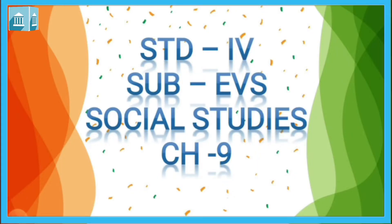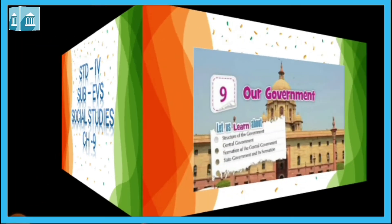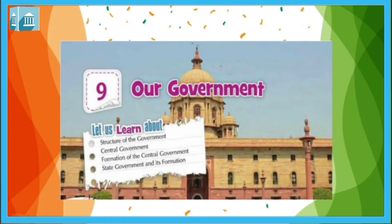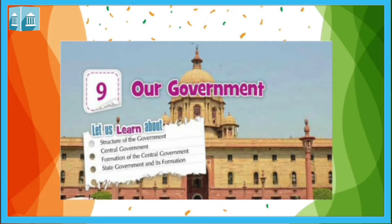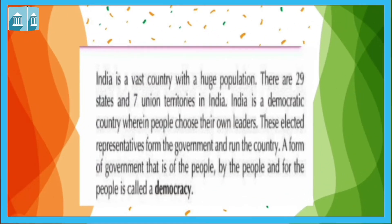Jai Vigyan, my dear students. Today's chapter belongs to SS Part, Chapter 9. The chapter name is 'Our Government.' In this chapter, we are going to learn the structure of the government, central government, formation of the central government, and state government and its formation. So let's start our study.